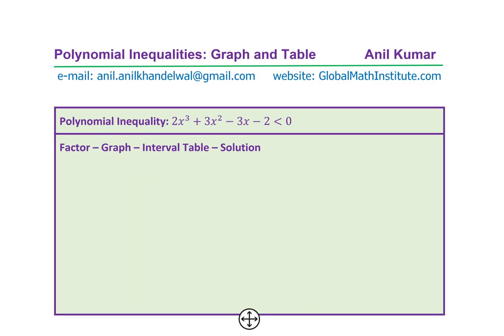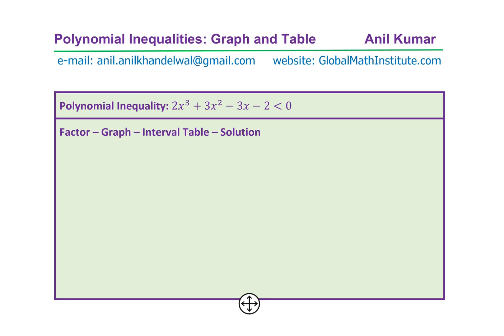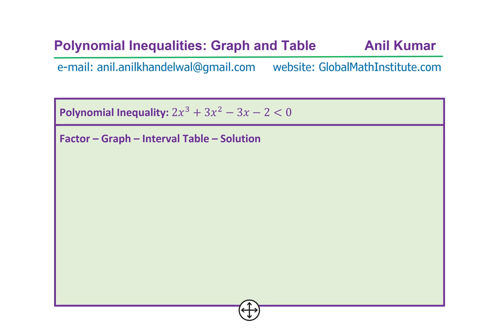We'll go through these steps now. So in this example, we have the question given to us as 2x³ + 3x² - 3x - 2 < 0. So first thing is to factor the given polynomial. There are many techniques to factor it. The best way is to understand what could be the possible rational zeros.